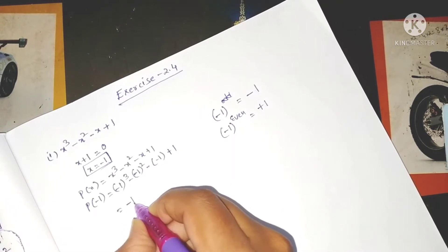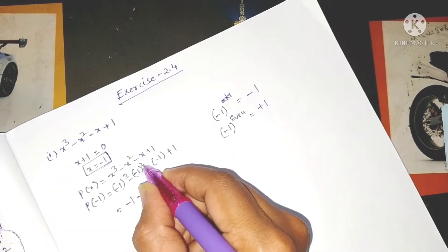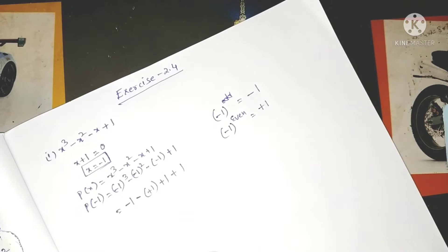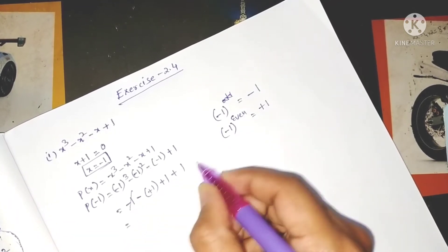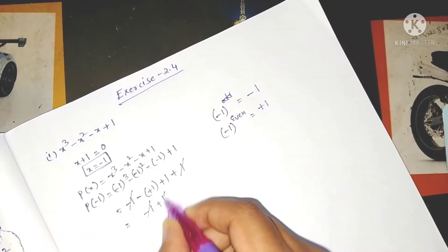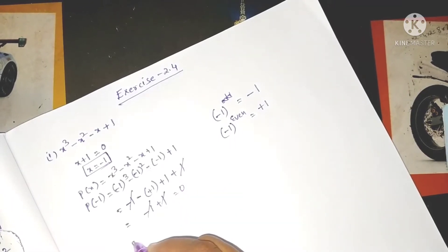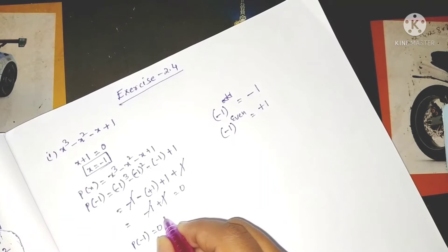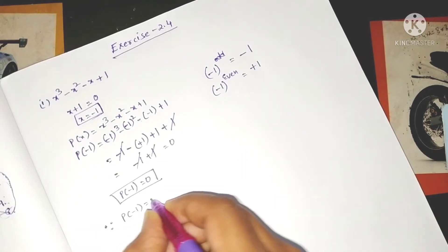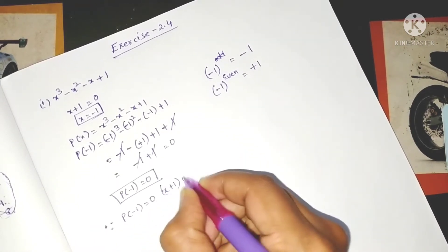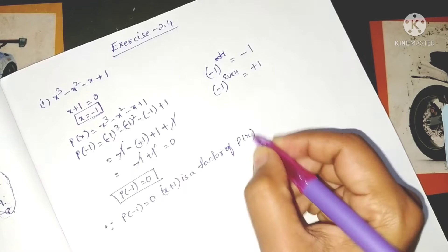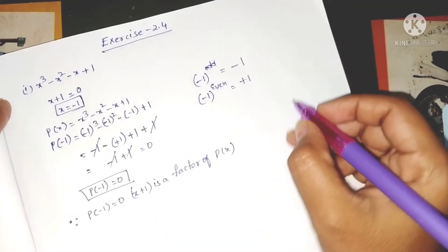Substituting x equals minus 1: we get minus 1 minus 1 minus 1 plus 1 plus 1. The minus 1 and plus 1 cancel, and then minus 1 and plus 1 cancel again. So p of minus 1 equals 0. Since p of minus 1 equals 0, x plus 1 is a factor of p of x.